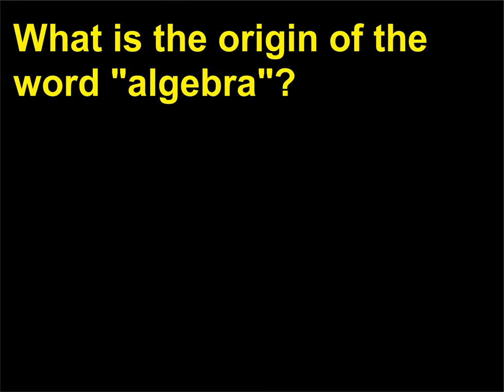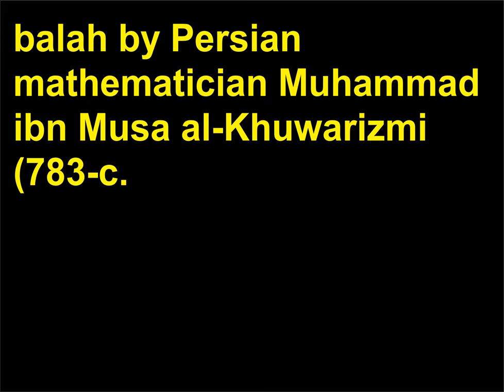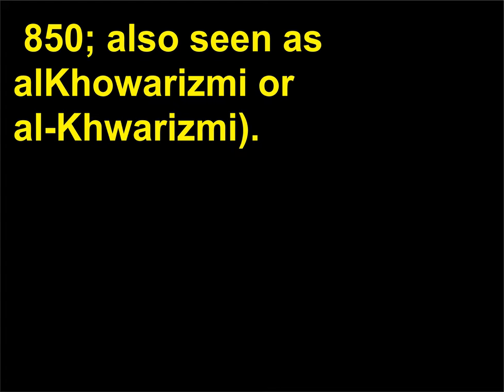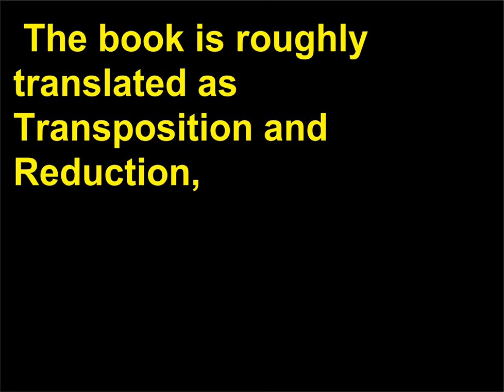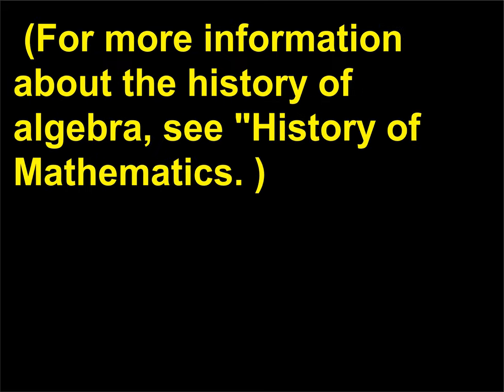What is the origin of the word algebra? The word algebra comes from the title of the book Al-Jabr w'al-Muqabala by Persian mathematician Muhammad ibn Musa al-Khwarizmi (c. 783–c. 850). The book is roughly translated as Transposition and Reduction, in which he explains the basics of algebraic methods. For more information about the history of algebra, see History of Mathematics.